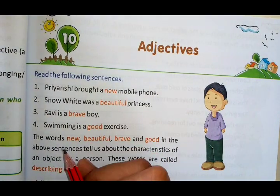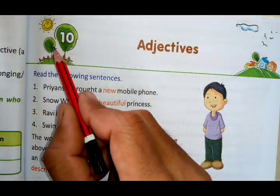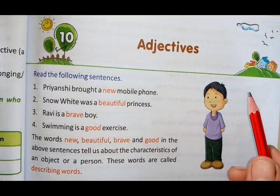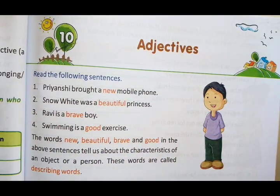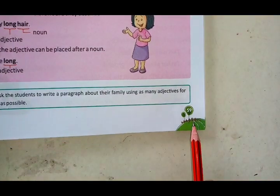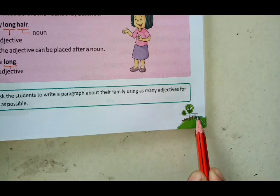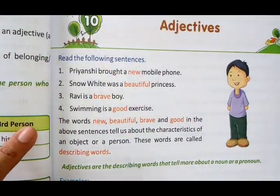Good morning students. Today we are going to start our new topic — your grammar topic, lesson number 10: Adjectives. What is meant by adjectives? We'll see some examples first, then I will explain the definition of adjectives. Read the following sentences on page number 59 of your grammar textbook. Open page 59 and look carefully at each and every sentence.